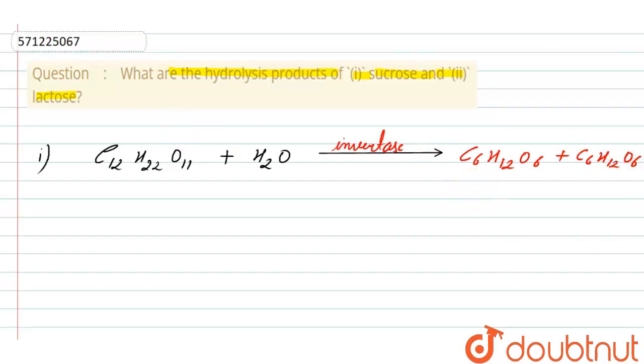So here one is glucose and the second one is fructose. So the products of sucrose hydrolysis are glucose and fructose.